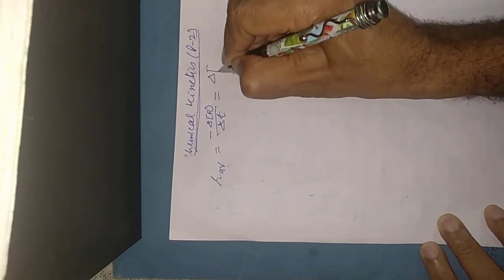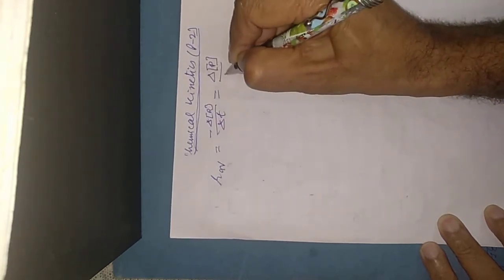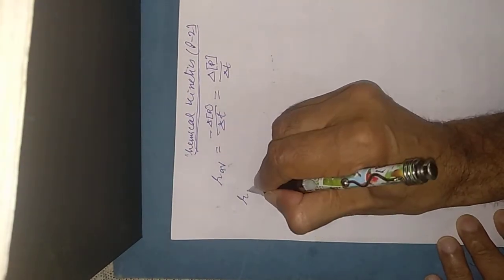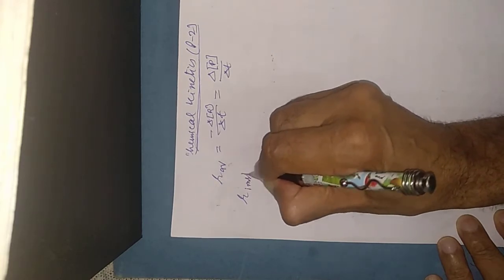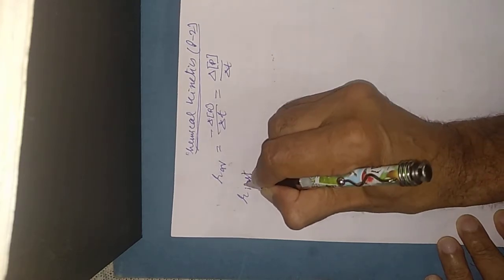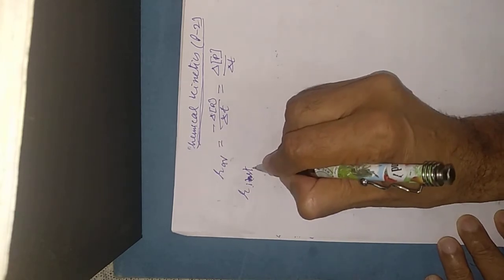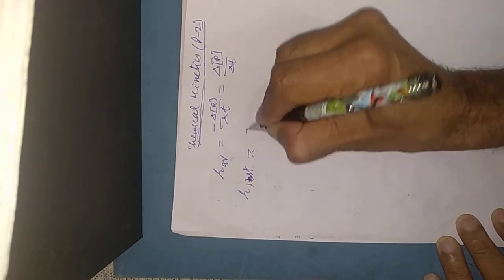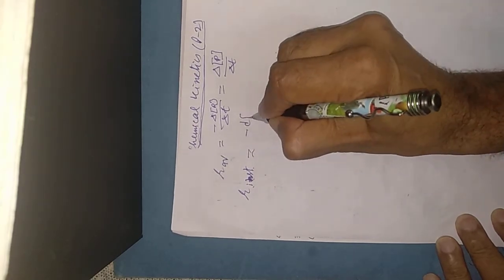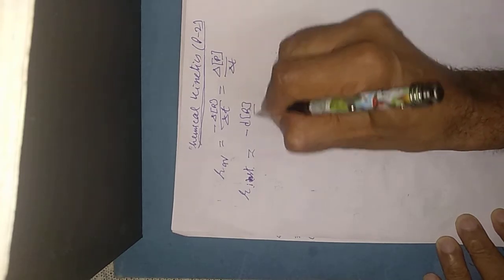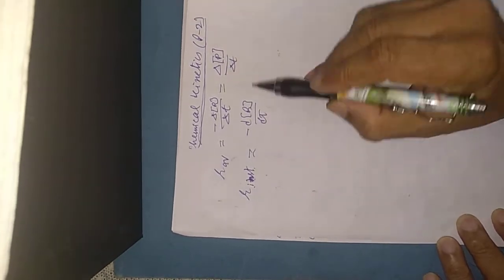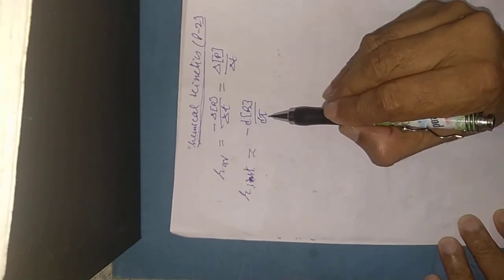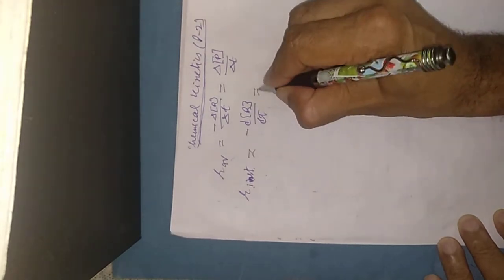Now R instantaneous, I N S T. R instantaneous is minus D concentration of R upon DT. This means small change in concentration during a small interval of time at a particular time.